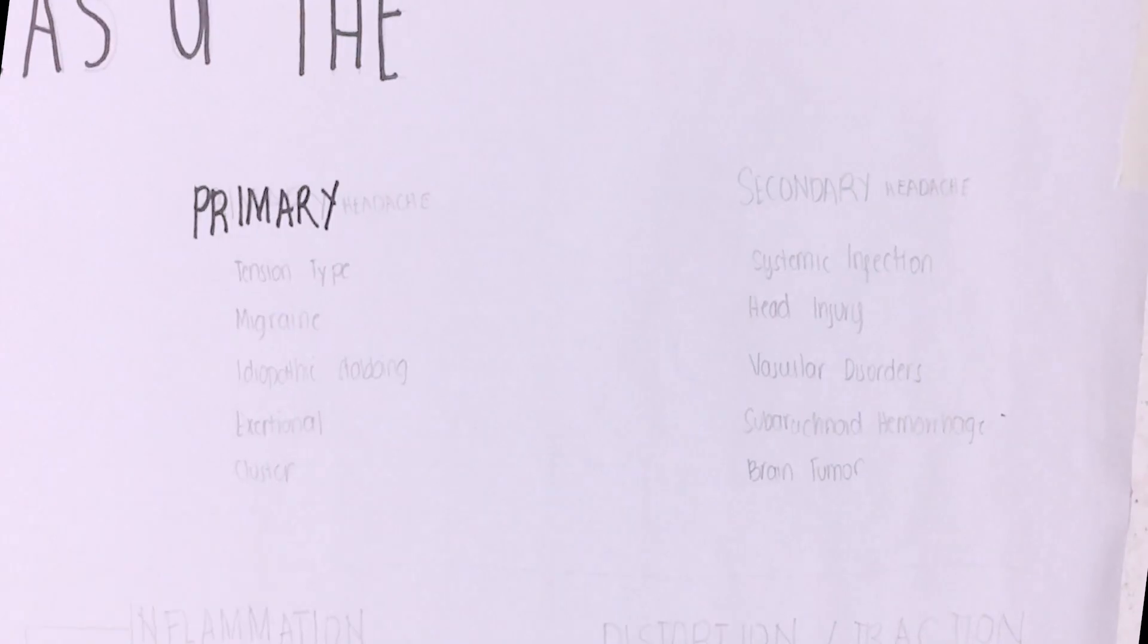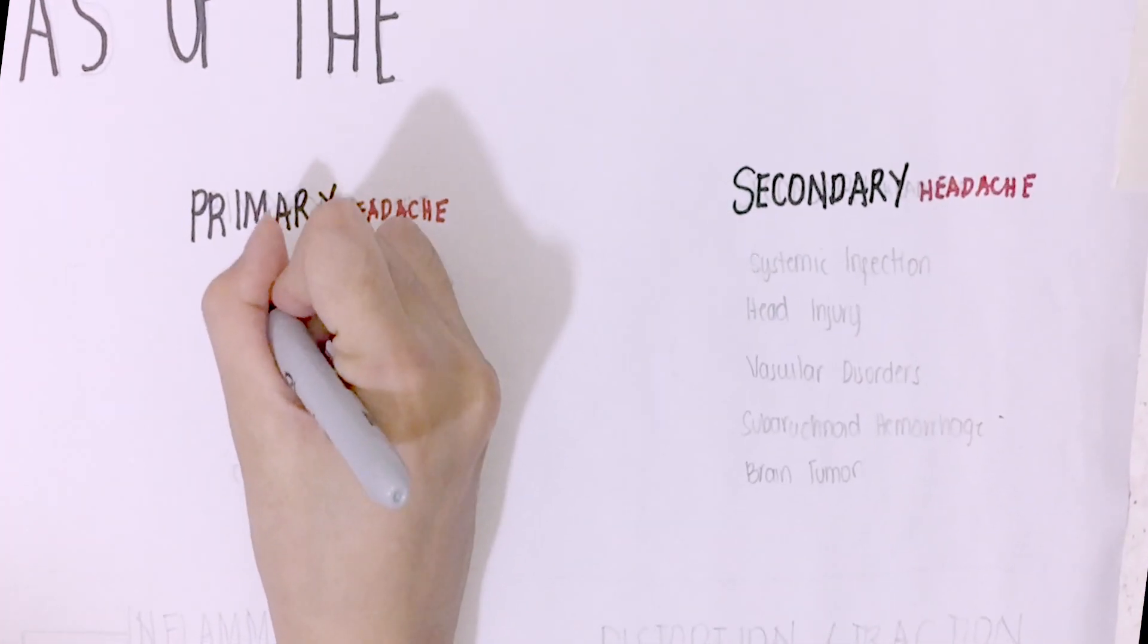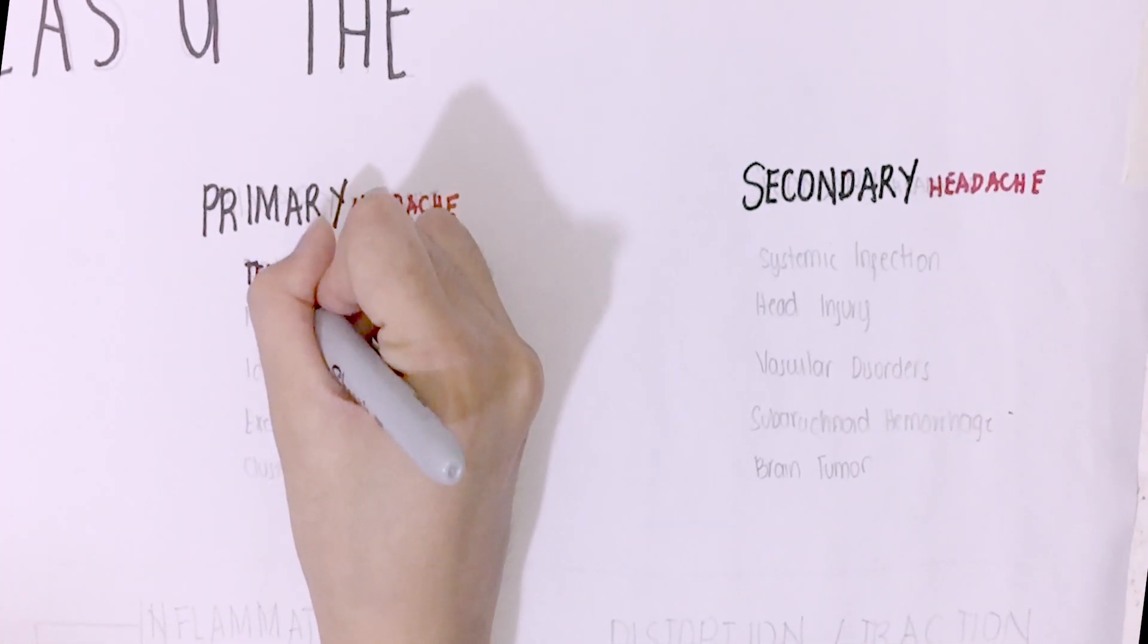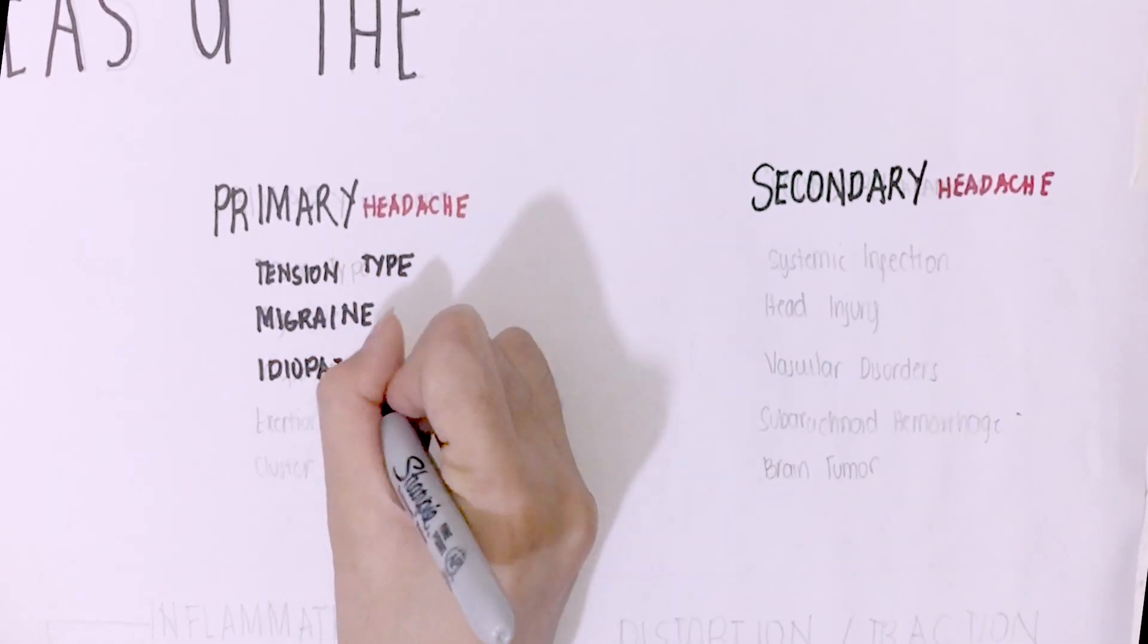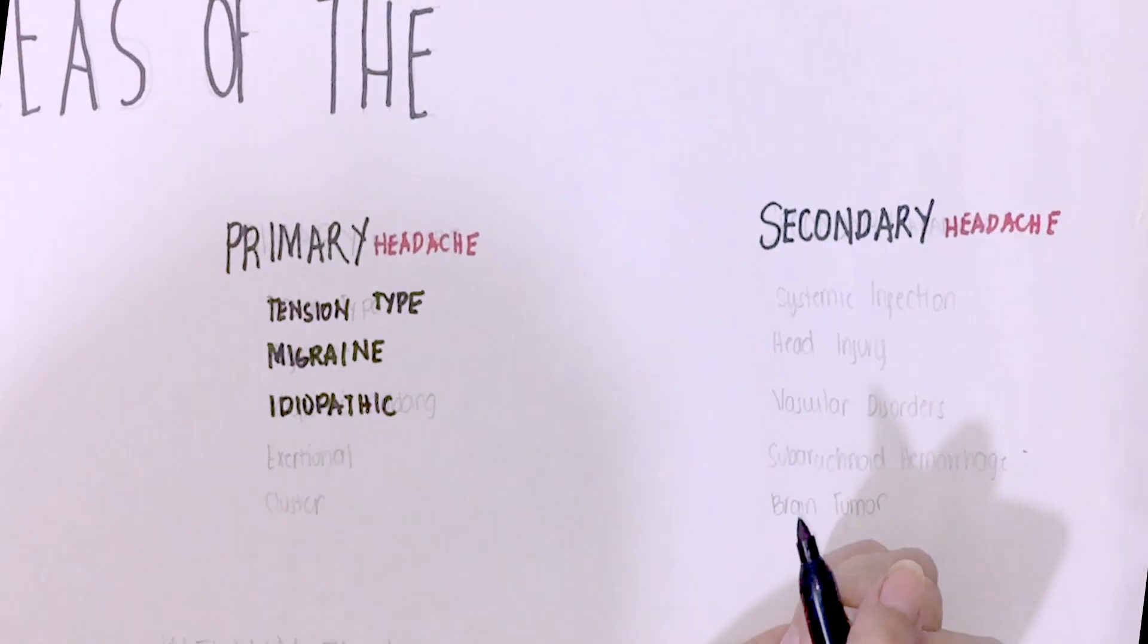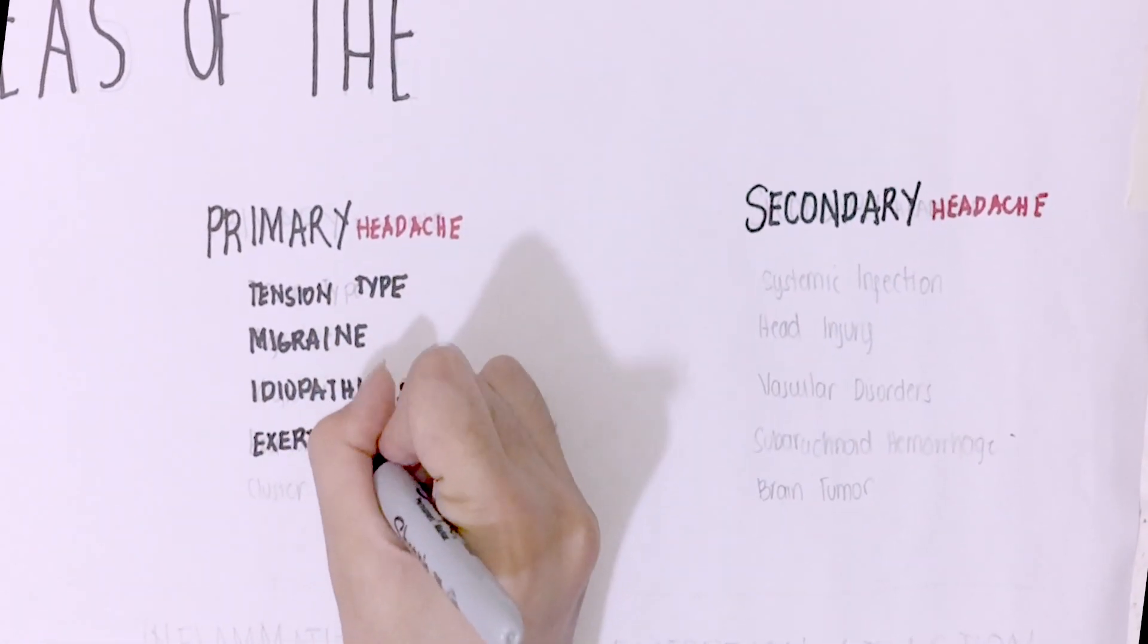Headache is classified as either primary or secondary. Primary headaches are headaches where the features are the disorders itself. In order of decreasing incidence, the most common is tension type, followed by migraine, idiopathic stabbing, exertional, and cluster.